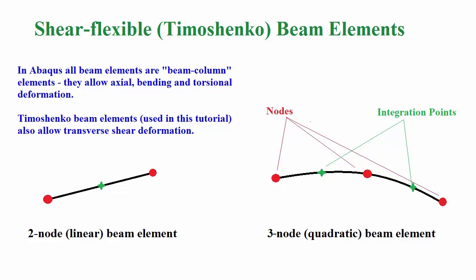Beam elements will be used for the analysis. These elements are good for modeling structures in which one of the dimensions, specifically the length, is much greater than the other two. All beam elements in Abacus allow deformation due to axial loads, bending, and torsion, hence these are ideal for the problem we are simulating.